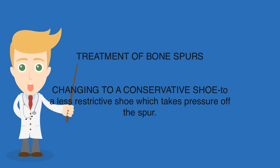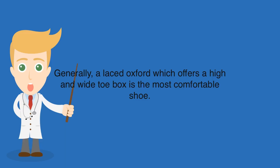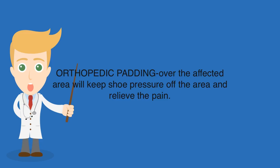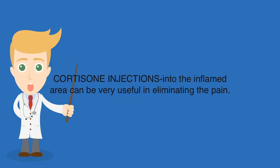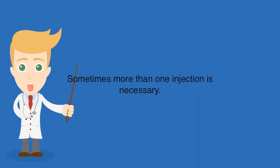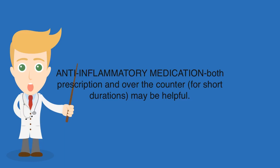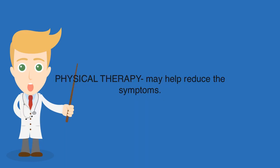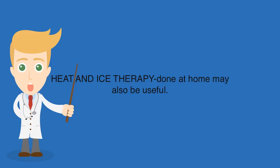Treatment of bone spurs. Changing to a less restrictive shoe which takes pressure off the spur — generally a laced oxford which offers a high and wide toe box is the most comfortable shoe. Orthopedic padding over the affected area will keep shoe pressure off the area and relieve the pain. Cortisone injections into the inflamed area can be very useful in eliminating the pain, and sometimes more than one injection is necessary. Anti-inflammatory medication, both prescription and over-the-counter, for short durations, may be helpful. Physical therapy may help reduce the symptoms. Heat and ice therapy done at home may also be useful.